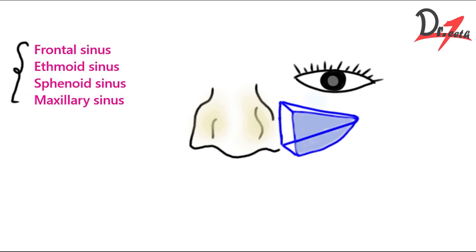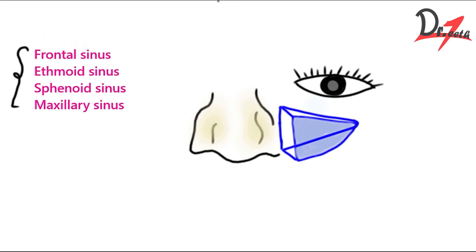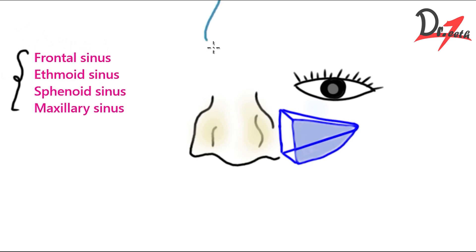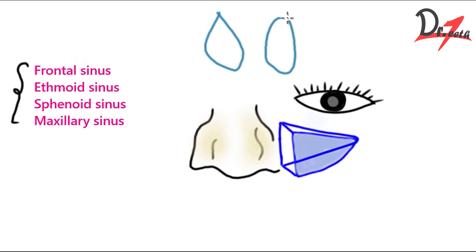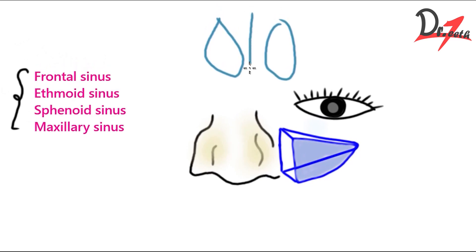Where is the frontal sinus? As the name suggests, they are in the frontal bone. They are triangular-shaped and are located in the frontal bone, one on each side of the midline. So this is the frontal sinus, up in the head.